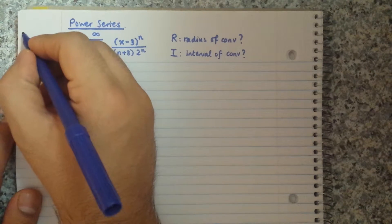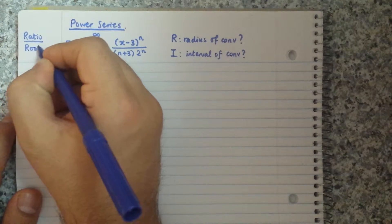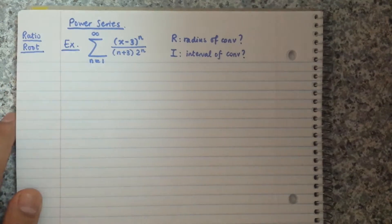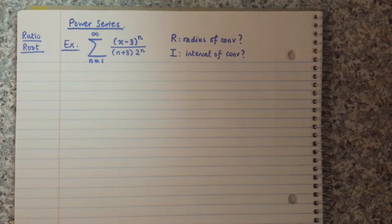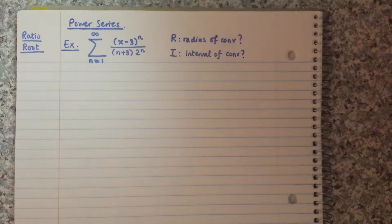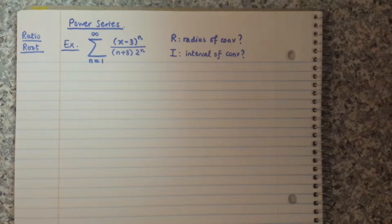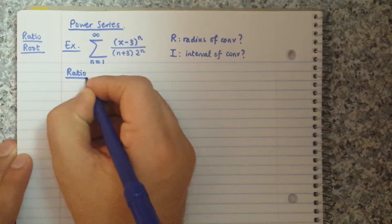For these types of problems, you use either the ratio test or the root test. You use the root test if you have all exponential-type functions — for example, all functions of power n like n^n, (x-3)^n, or 2^n. But in this problem there's a polynomial, and if there's a factorial, the ratio test fits better. So here we go — we use the ratio test.